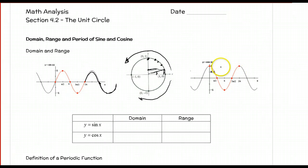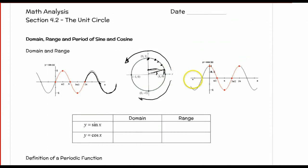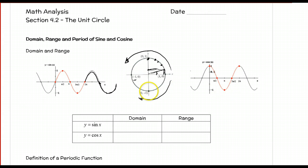To generate the cosine curve, instead of looking at the y-coordinates, we look at the x-coordinate. At 0 radians, the x-coordinate is 1. At pi over 2, the x-coordinate is 0. At pi, the x-coordinate is negative 1, so we have a point at pi, negative 1. At 3 pi over 2, the x-coordinate is 0. And coming back at 2 pi, the x-coordinate is 1.